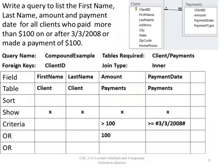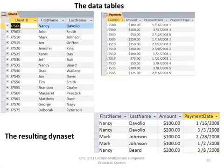Let's look at compound criteria. Write a query to list the first name, last name, amount, and payment date for all clients who paid more than $100 on or after 3-3-2008, or made a payment of exactly $100. I have an AND scenario — if the payment is greater than 100 and it's on or after 3-3-2008, they're on the same line. So if it's this AND this, or they made a payment of $100, the record will display in the Dynaset. And there is the Dynaset on the bottom right-hand side of your screen.